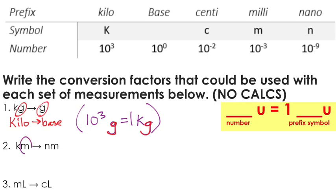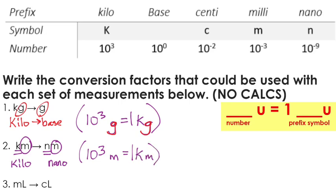In this next problem, both units have M in common — that's our meter as the base unit. But both M's have another letter that are not the same, so this is going from our kilo prefix unit to our nano unit. Because we have two prefixes, we're going to need two unit equations to do this conversion — one equation for each prefix. Our kilo equation is going to be almost identical to the one we wrote above, just substituting meter as our unit instead of grams.